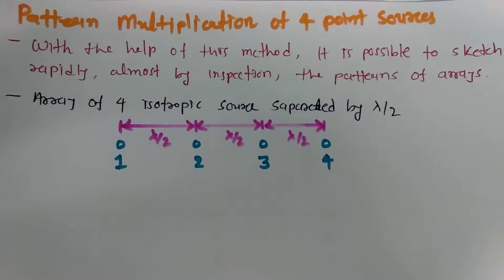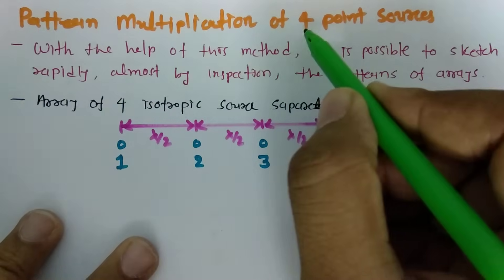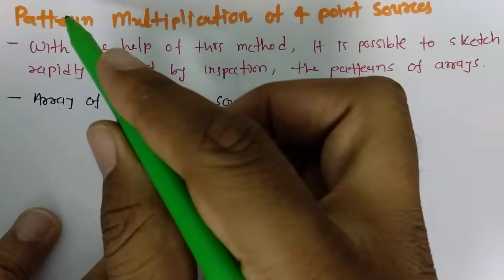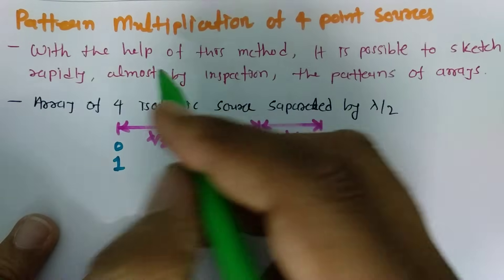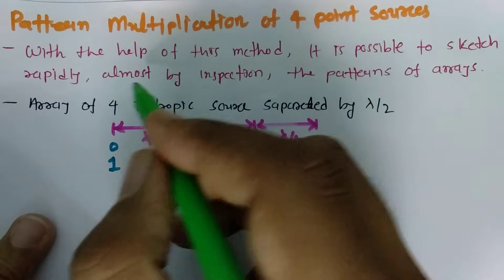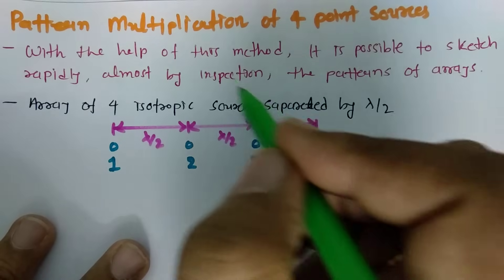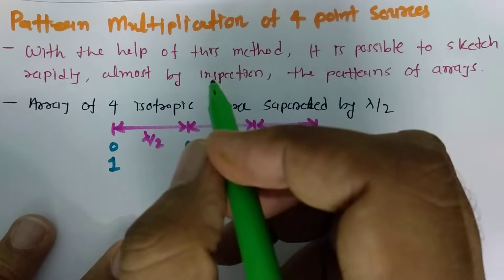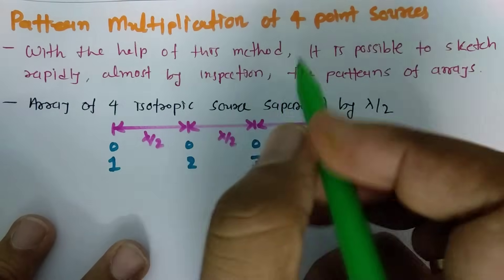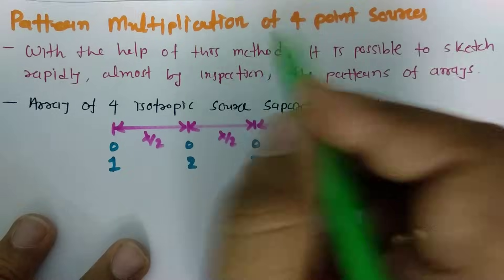Welcome to the antenna and wave propagation playlist. In this session I'll be explaining pattern multiplication of four point sources. With the help of pattern multiplication, it is possible to sketch an antenna radiation pattern almost by inspection, and we can find the radiation pattern very fast. This is a quick method to obtain a radiation pattern for an antenna array.